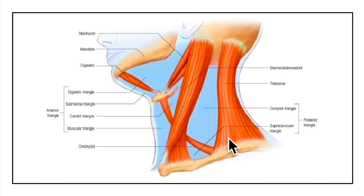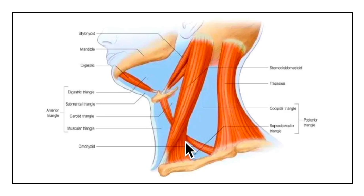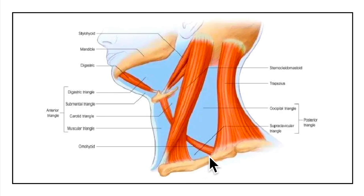Now let's learn about its boundaries: the anterior boundary, posterior boundary, the inferior or the base, apex, the roof, and the floor of the triangle. The anterior boundary is formed by the posterior border of the sternocleidomastoid muscle. The posterior boundary is formed by the anterior border of the trapezius muscle. The inferior or base is made up of the middle one-third of the clavicle bone. The apex lies on the superior nuchal line where the trapezius and the sternocleidomastoid muscles meet.